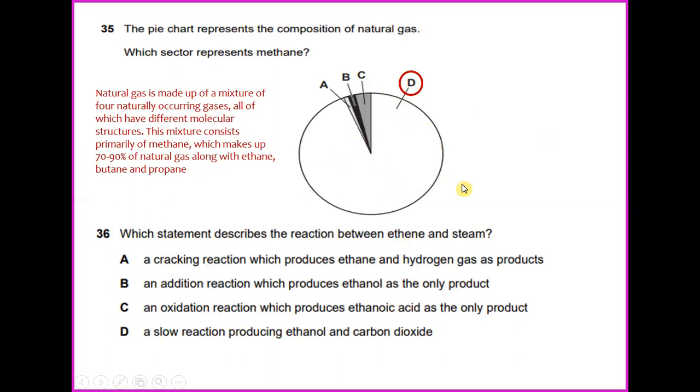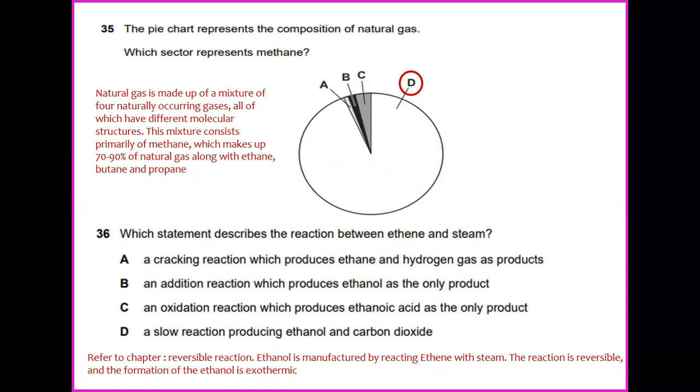Which statement describes the reaction between ethene and steam? Refer to chapter reversible reactions. Ethanol is manufactured by reacting ethene with steam. The reaction is reversible and the formation of ethanol is exothermic. So the answer for this would be an addition reaction which produces ethanol as the only product.